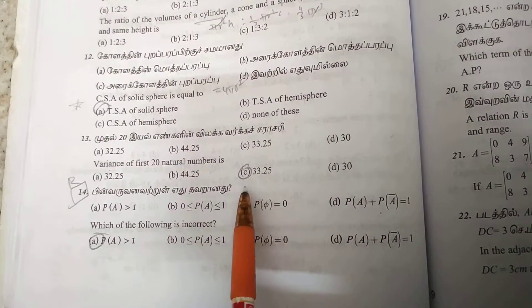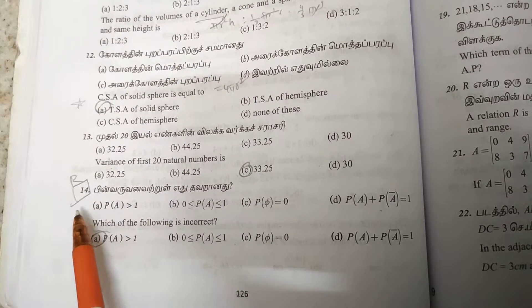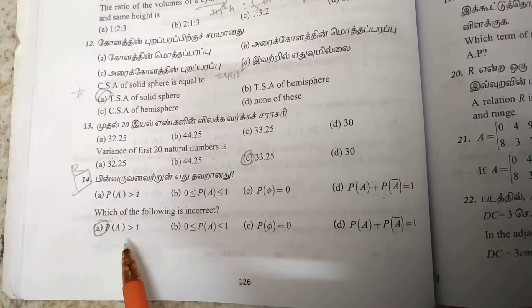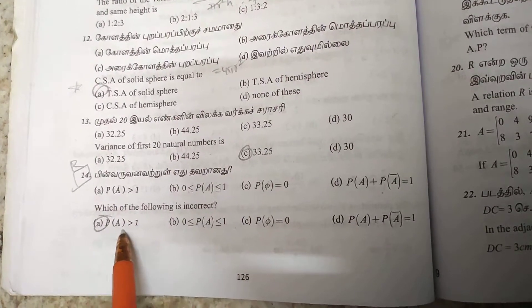Thirteenth one is book back. Fourteenth one is book back, then repeated. Which of the following is incorrect? P value greater than one.